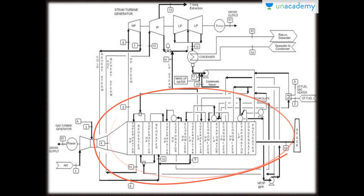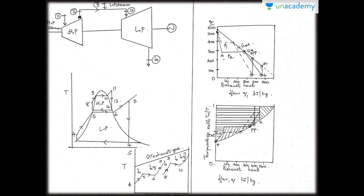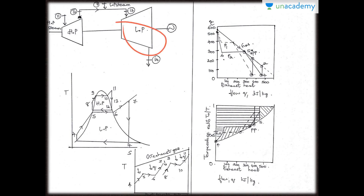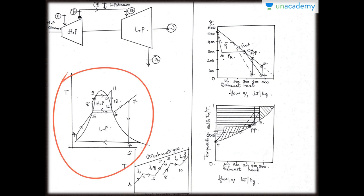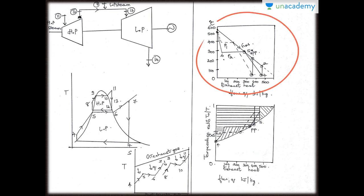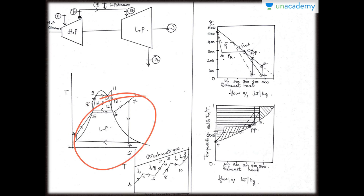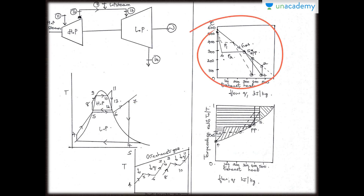However, the smaller the mean temperature difference, the larger the amount of heat transfer surface required to effect the heat transfer rate. This is the flow diagram showing the simple HP and LP turbines. This is the TQ diagram and the TS diagram given over here. You can see two cycles present and the exhaust gas indicated as points 4, 5, 6, 7, 8, 9, 10, 11, 12. This shows the exhaust heat flow to temperature and the exhaust heat flow to the temperature ratio, with P1 shown in dotted lines and P2 in straight lines.